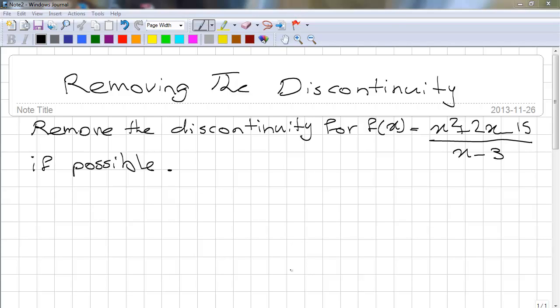Today we're going to solve a problem about removing the discontinuity. The question is: remove the discontinuity for f(x) equals x squared plus 2x minus 15 over x minus 3. We know that this function is discontinuous where x equals 3.